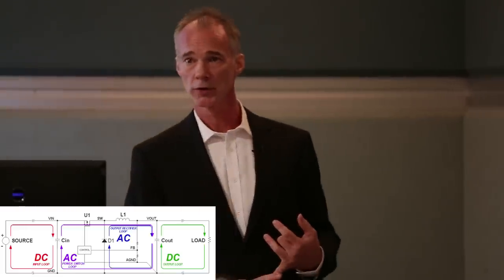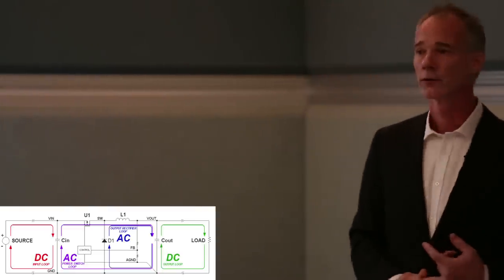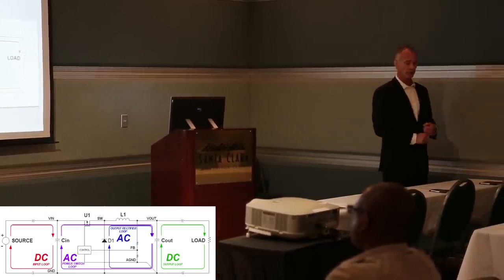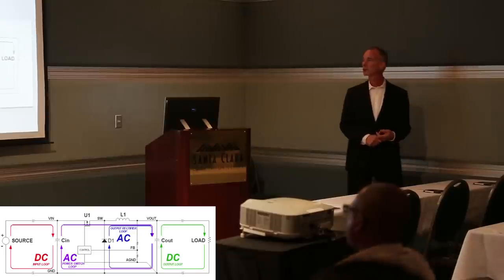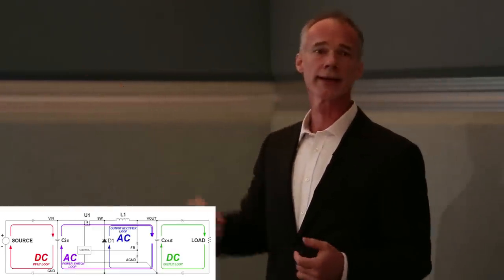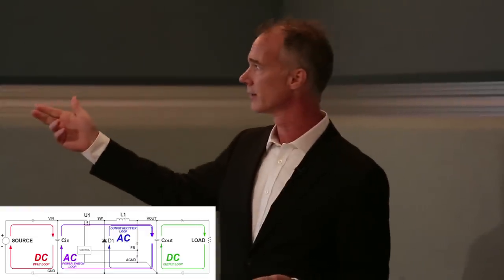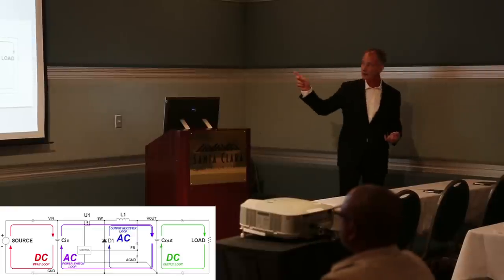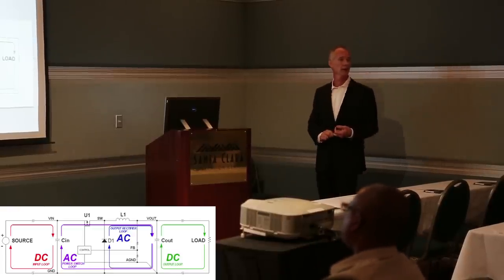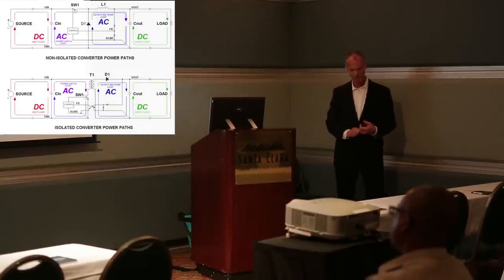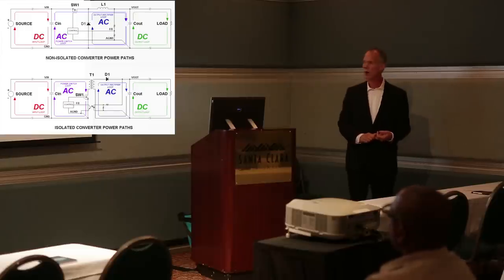The AC current loops are the power switch loop, formed when the switch is on: current flows from the positive terminal of C-in through the series pass element, through the magnetic element, to the positive terminal of C-out, and is returned from the negative terminal of C-out back to the negative terminal of C-in. When the switch is off, energy stored in the magnetic element is recovered — that current loop is sourced from the inductor, charges the positive terminal of C-out, and is returned through the output rectifier back to the magnetic element.